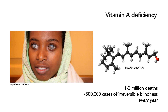Before we get into the details, let's step back and look at the example of vitamin A deficiency. Vitamin A is a very important compound. Lack of it causes one to two million deaths per year, and over half a million cases of irreversible blindness every year.